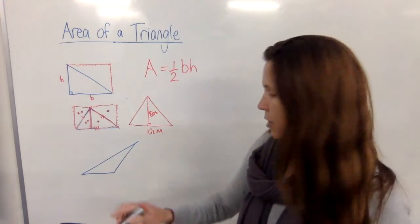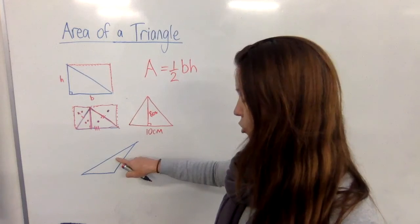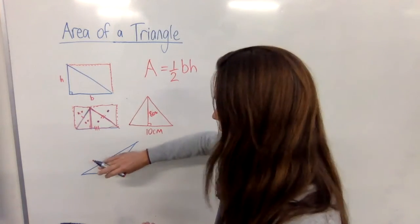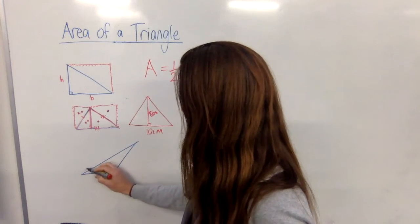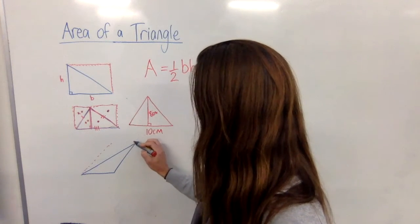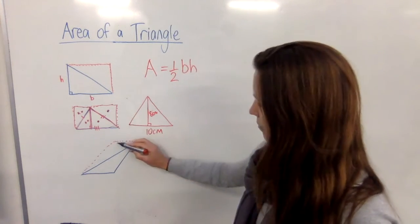Now if we could imagine actually just duplicating another triangle exactly the same as this one, and then flipping it over and turning it upside down and spinning it around, we can actually place it like that.